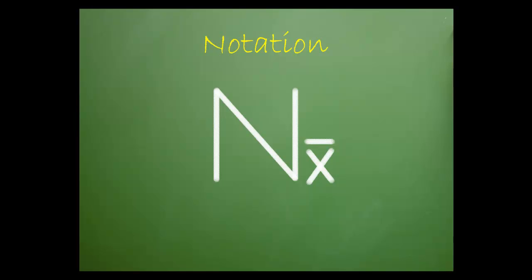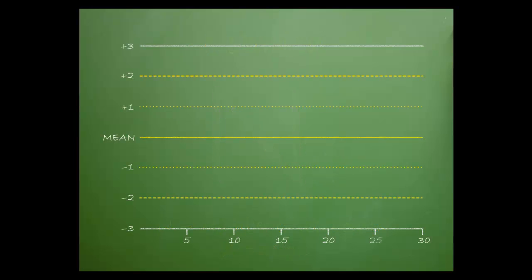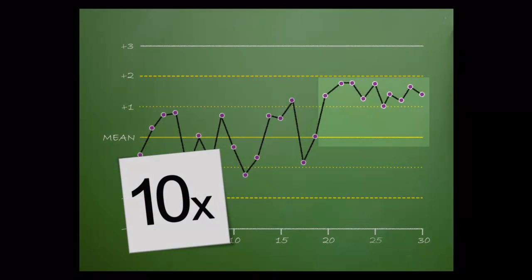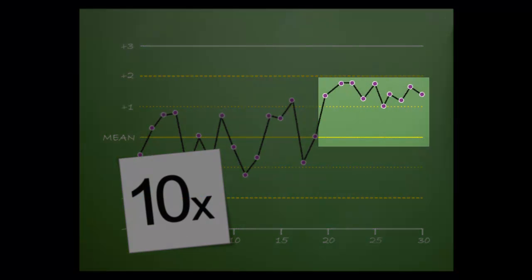Another type of rule notation follows this pattern: N equals the number of QC points and X-bar is the mean. Here we see the mean. In this case there are ten consecutive points on the same side of the mean.